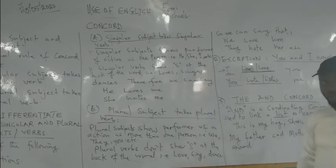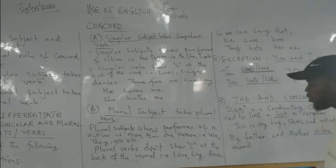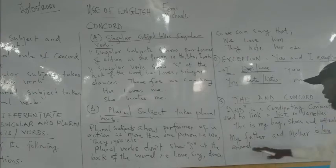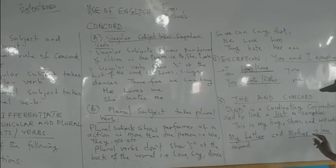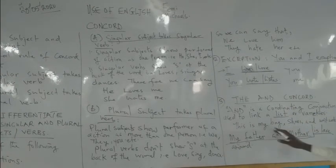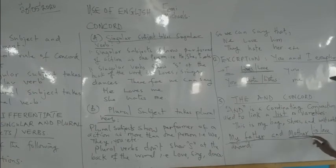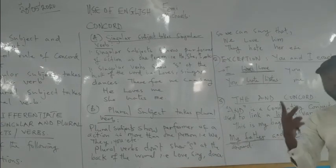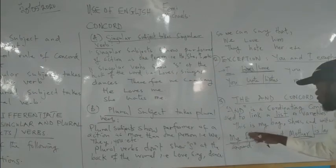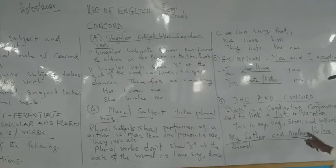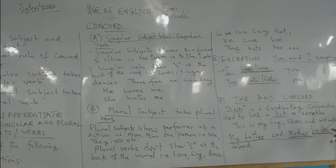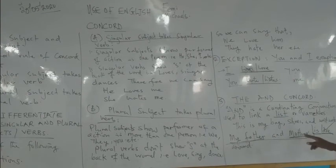To be candid with you, if you go into the exam hall and say 'my father and mother is around,' you will be marked wrong. 'My father and mother' — they are the subject here, about to perform an action. Father is one person and mother is another person. Combined, that is already two, making it plural. So if we have plural subjects, our verb must be plural. Between 'is' and 'are', 'are' is plural. Therefore: 'my father and mother are around.'